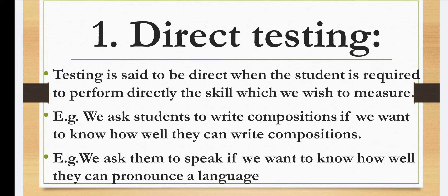The next example: if we want to know how well students can pronounce a language, we ask them to read a paragraph, and when they read it, we assess their pronunciation. So these are examples of direct testing — the teacher directly applies whatever their wish is.